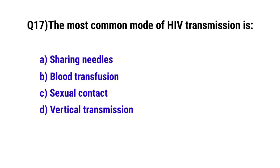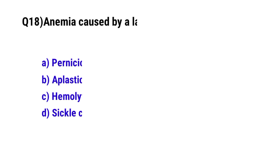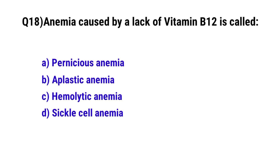Question number seventeen: The most common mode of HIV transmission. Question number eighteen: A lack of vitamin B12 is called. The correct option is pernicious anemia.